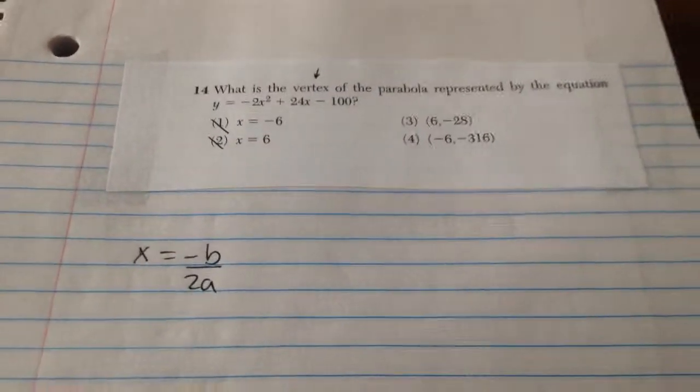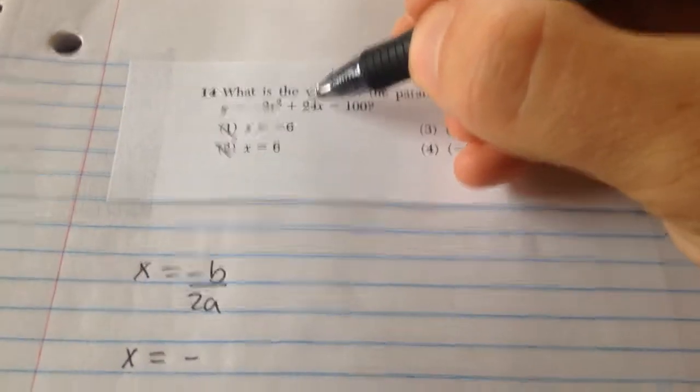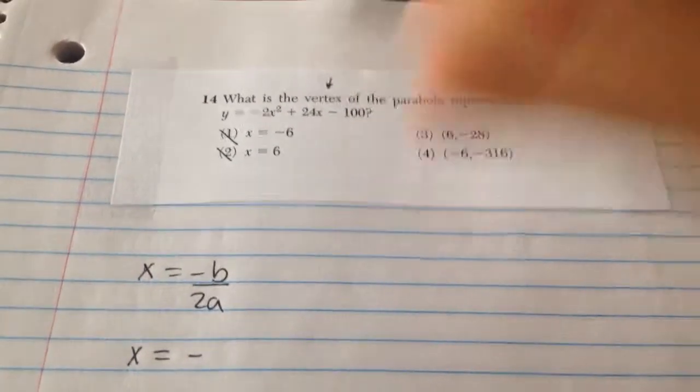Remember, we use the equation for the axis of symmetry to find the vertex. So in this case, we plug in negative b value, which in this case is 24,